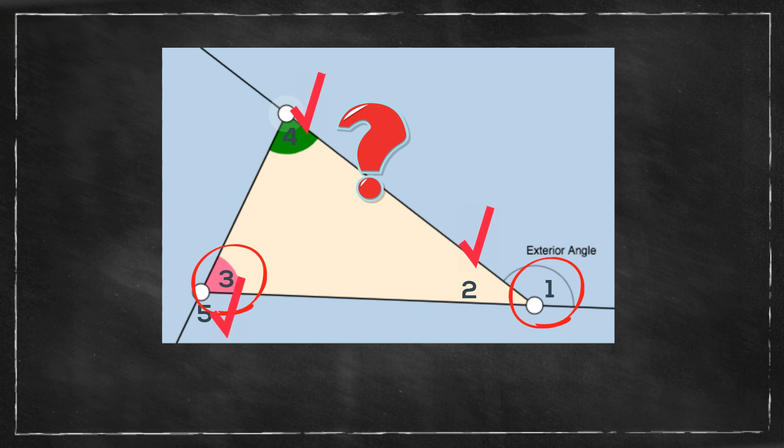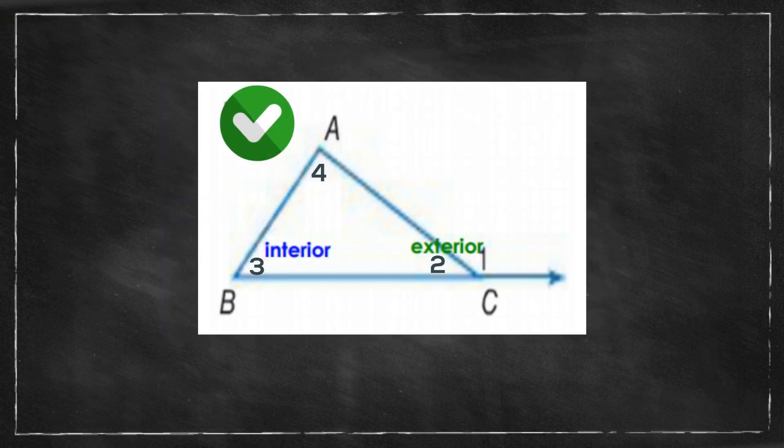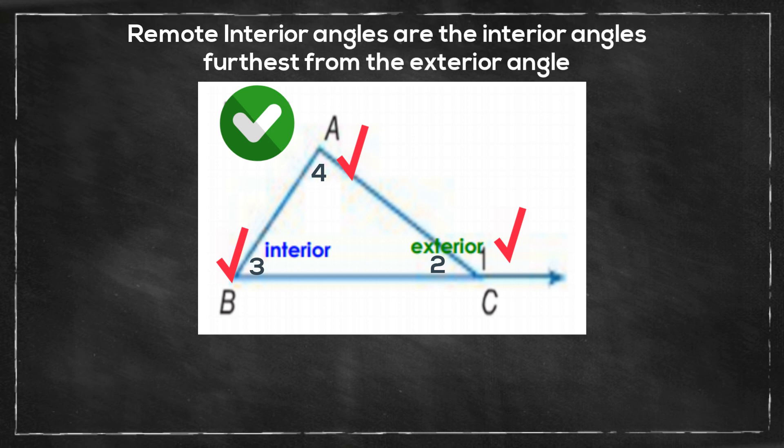Let's first look at the relationship between the exterior angle measure and the interior angle measure. The exterior angle measure, which in this case is angle 1, is equal to the interior angle measures of 3 and 4. They are called the remote interior angles. They are remote because they are furthest away from the exterior angle.